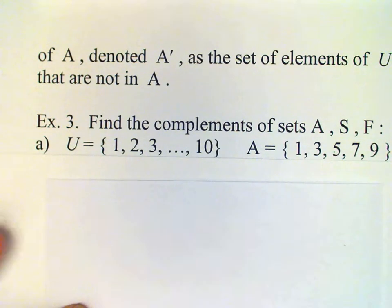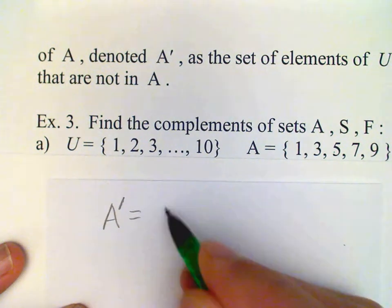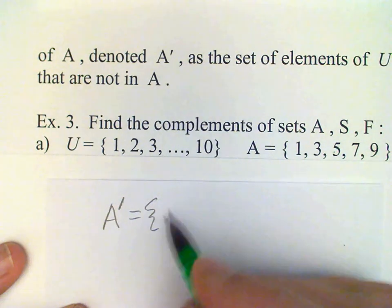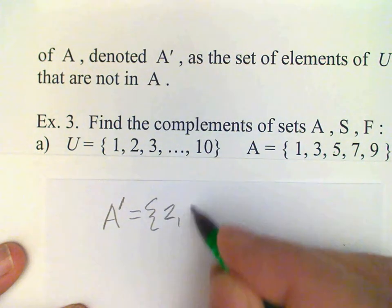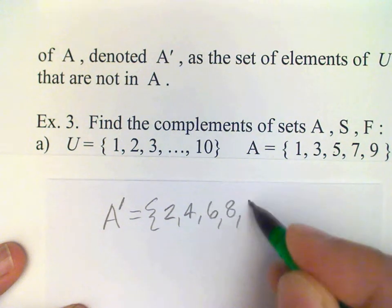Then to get the complement of A, we look at our universal set and we see what elements in U are not in A. And clearly those numbers would be 2, 4, 6, 8, and 10.